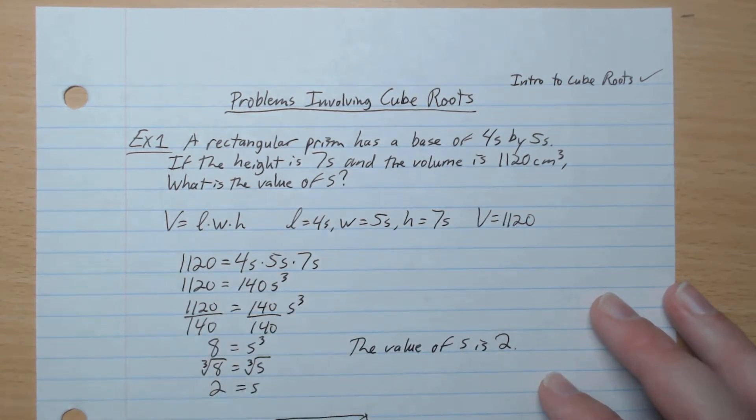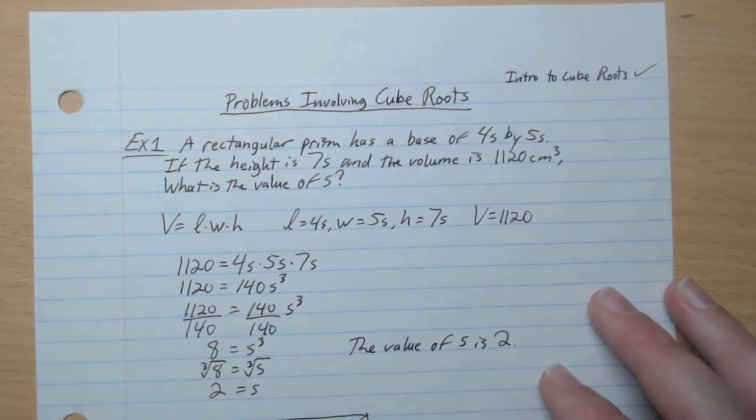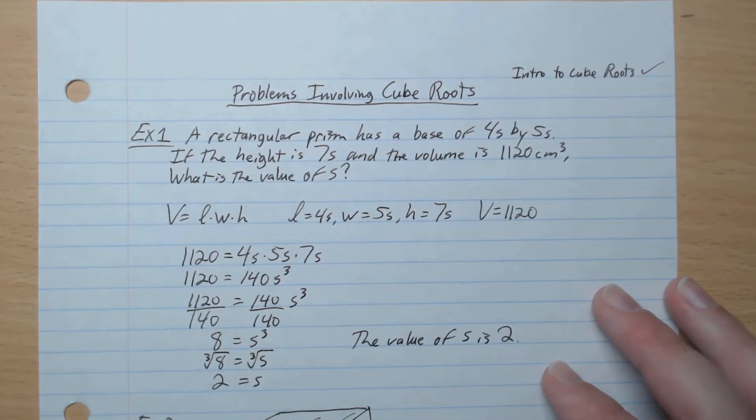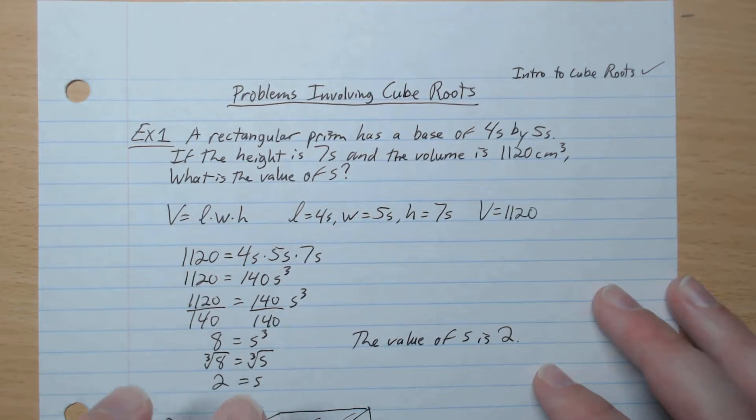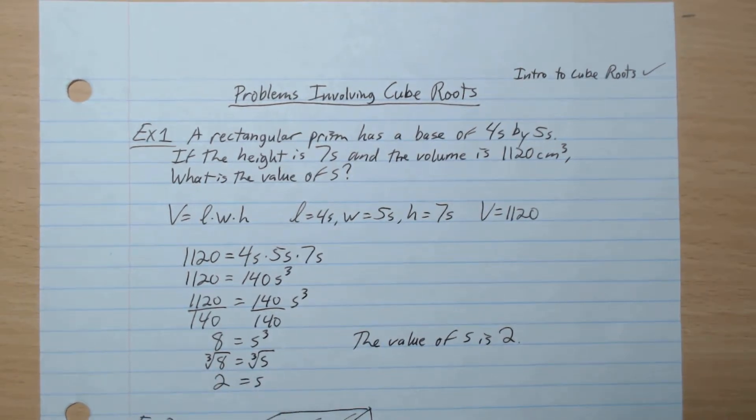which gives 140s³. We want s³ on its own, so we divide by 140 both sides. s³ equals 8. We want to get rid of the cube, so we cube root both sides,